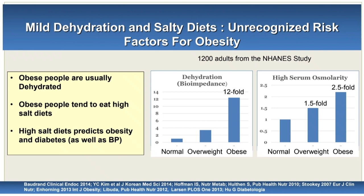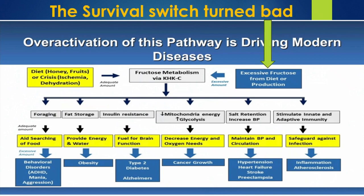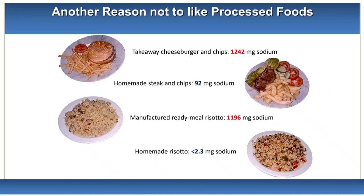High salt diets predict obesity, diabetes, and hypertension. Over-activation of the survival pathway by our industrial technology causes disease. This is a survival switch turned bad — another reason not to like processed foods.